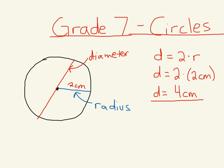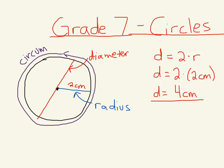We've got one more thing to note about circles before we go to the next slide, and that is the distance all the way around a circle. If you took a piece of string and wrapped it around the circle, the length of that string is called the circumference. The circumference is a little more challenging — where the formula comes from I'll show on the next slide.